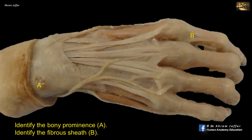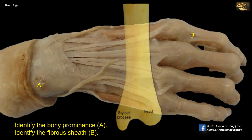Identify the bony prominence A and the fibrous sheath B. A is a bony prominence on the medial side of the dorsum of the forearm. It is the head of the ulna and it becomes more prominent in pronation. Feel that on yourself.